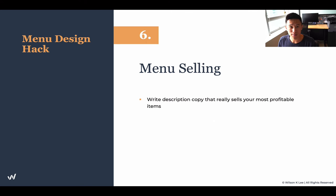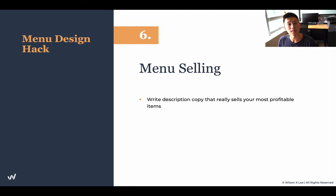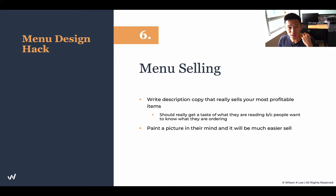Menu hack number six: menu selling. This is something a lot of restaurants overlook. When you have a menu item, it's not just to tell your customers what you have to offer — it's an opportunity to sell to your customers. Use this opportunity because your customers are reading the whole menu and you have their attention. Therefore, you should sell them. You must put your most profitable items on there and paint a really vivid picture in your customers' eyes so that when they're reading it, they're already anticipating — wow, this sounds so good. That's how you sell your customers on your cash cows and stars.